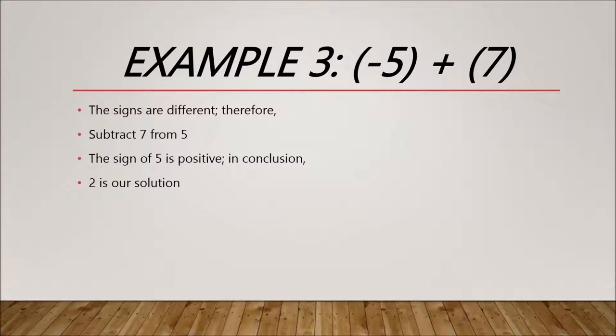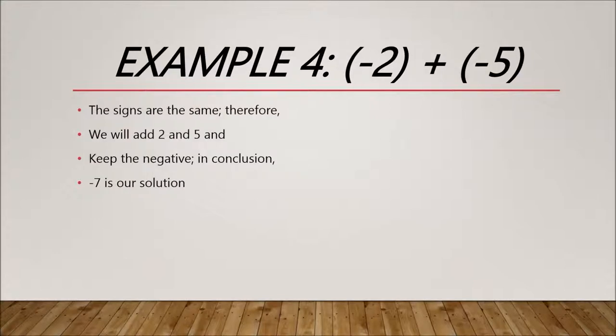Example 4: -2 + -5. These two numbers have the same signs, so we add 2 and 5 and keep the negative, which means in conclusion -7 is the solution.